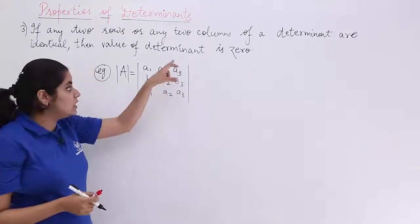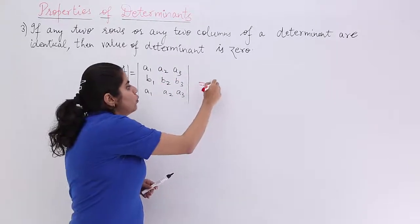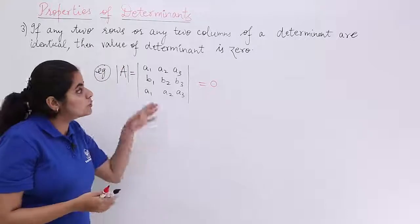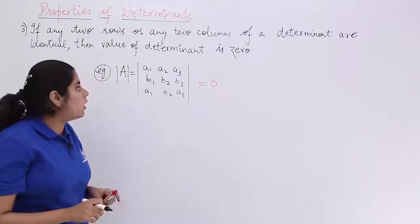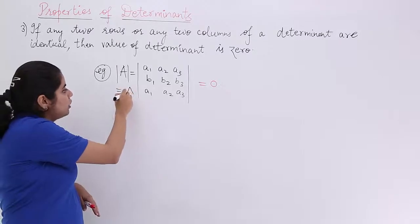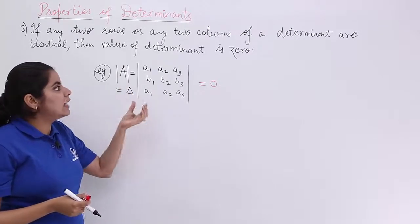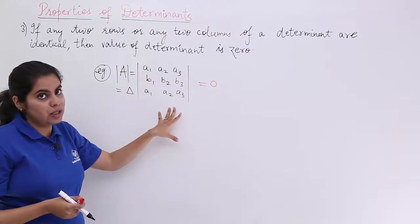You see that these two values are identical. These two rows are identical. So its value should be 0. That is what I need to say by this property. Now, if determinant of A is named as something called as del, what happens? I say that del is this value.